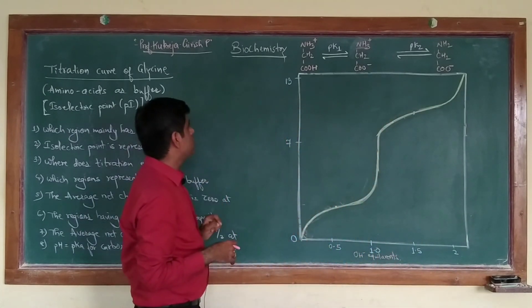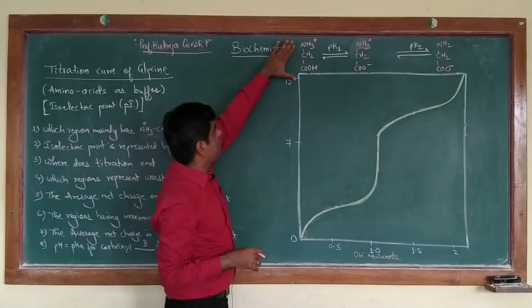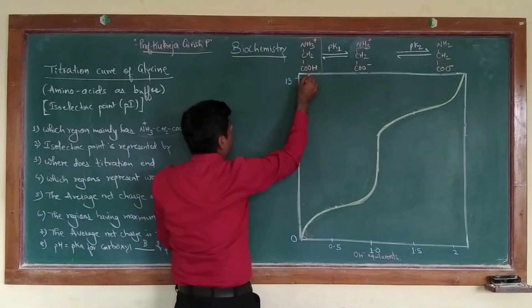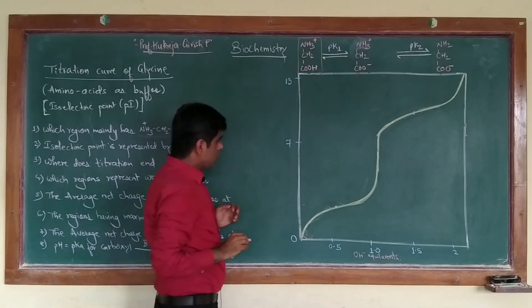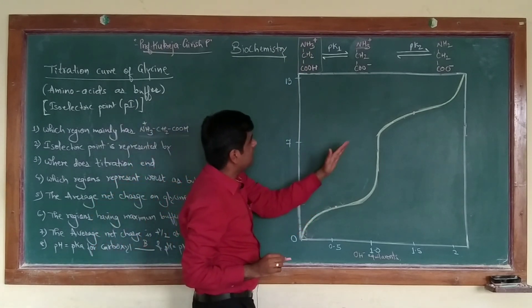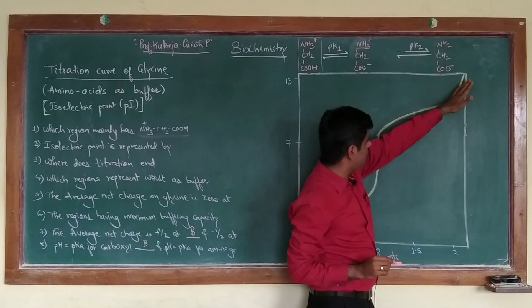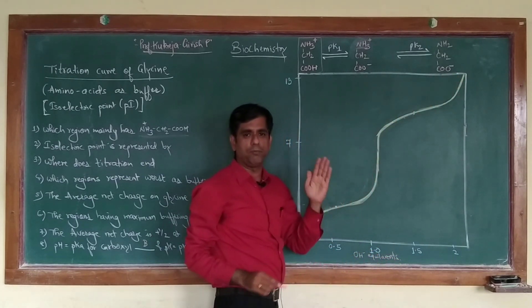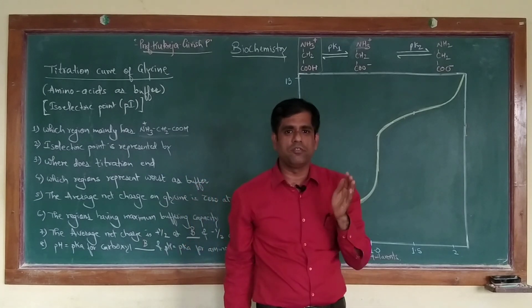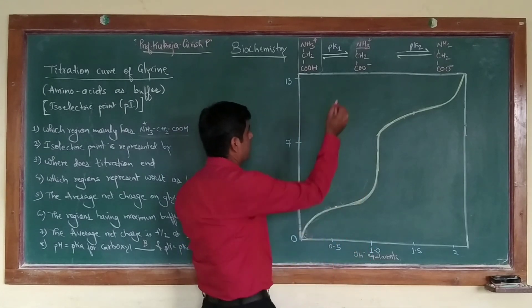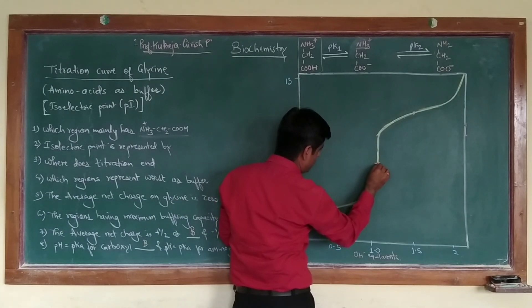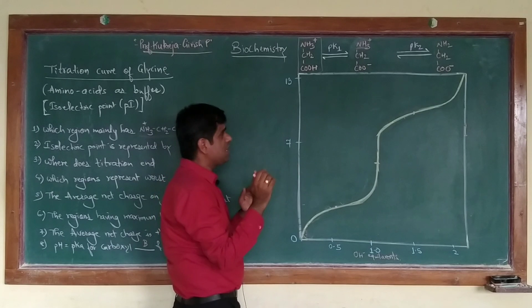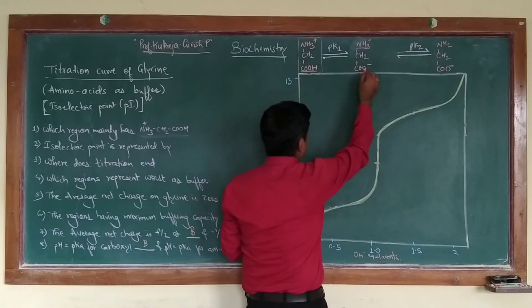A typical glycine in its fully protonated form — this particular structure represents the fully protonated form of glycine. If you start the titration, you will find that it gets completed at around pH 12. As the titration proceeds, there is an inflection point where you have completed 50 percent of the titration of this particular amino acid, corresponding to this particular point.